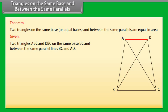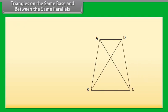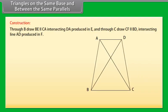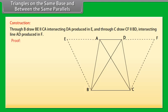Triangles on the same base and between the same parallels. Theorem: Two triangles on the same base or equal bases and between the same parallels are equal in area. Given: Two triangles ABC and DBC on the same base BC and between the same parallel lines BC and AD. To prove: area of triangle ABC equals area of triangle DBC.